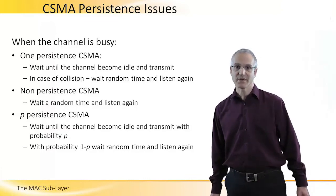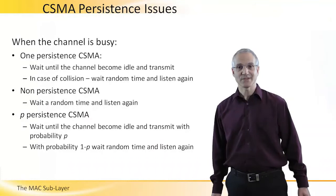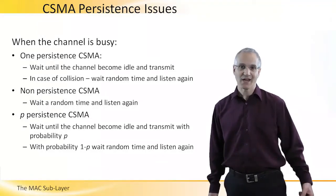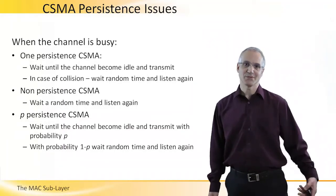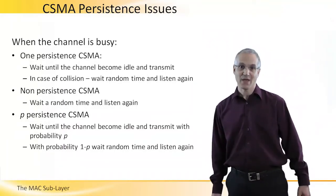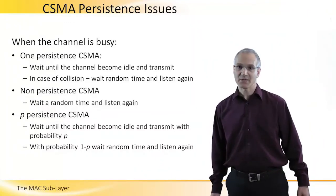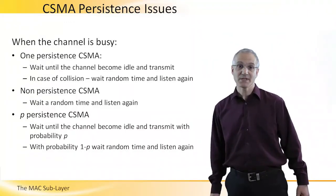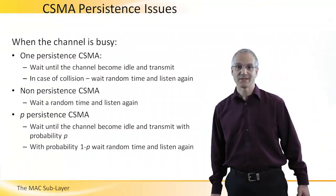In non-persistent CSMA, we wait a random amount of time and try to listen to the channel again. If it is idle, we transmit. If it is occupied, we wait another random time. And then, of course, there is p-persistent CSMA, where we wait until the channel becomes idle and transmit with some probability p. And with probability 1 minus p, we wait a random time and listen again.